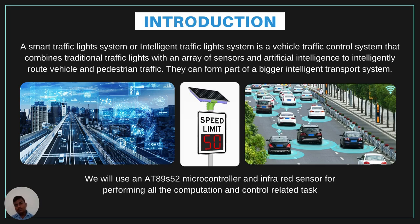Introduction. So what is the Smart Traffic Lighting System? A smart or intelligent traffic lighting system in which we use sensors, artificial intelligence, microcontrollers, and many advanced technologies which increase the capacity of city streets without adding new roads and bridges. This system will also be able to directly control vehicles and manage traffic on the roads.